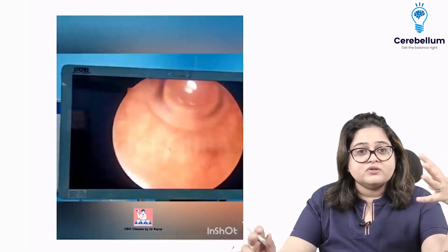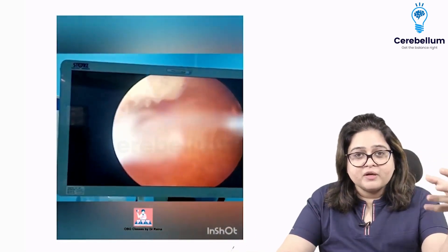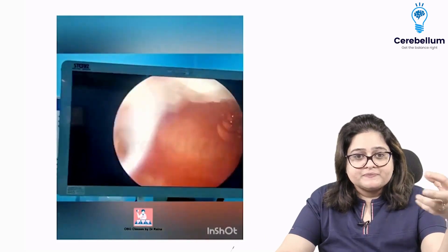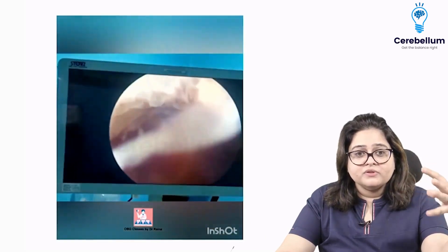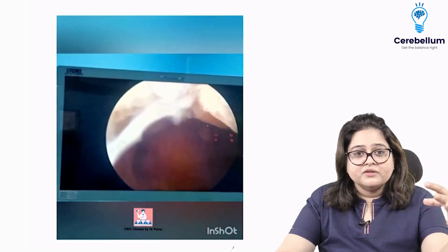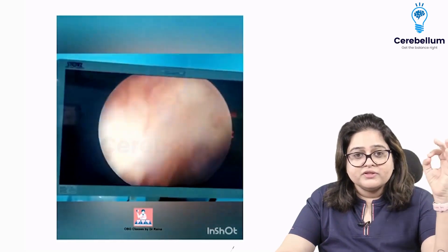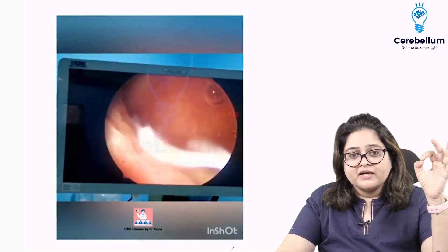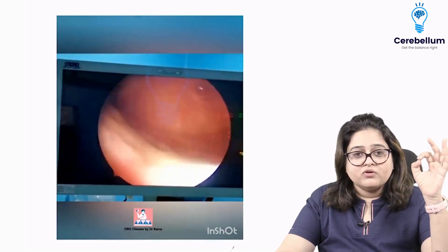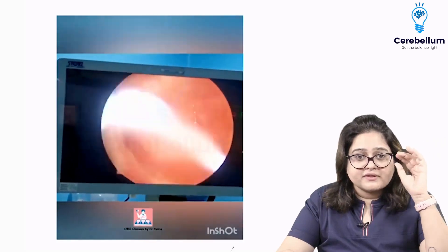And that is a normal cavity. You can see a little bit of air bubbles which I've entered, but this is a normal looking uterine cavity on a hysteroscopy. So that's how a normal hysteroscopy looks like.